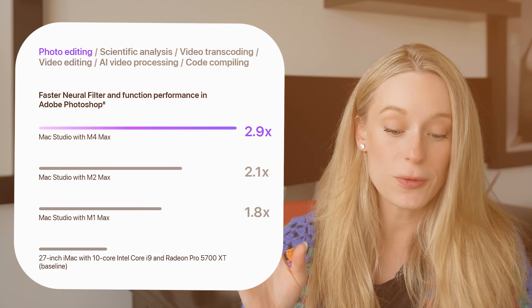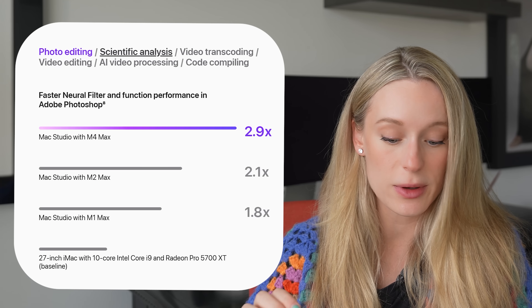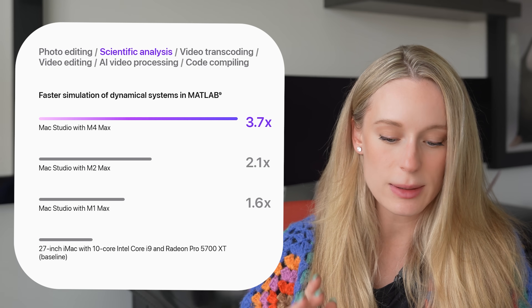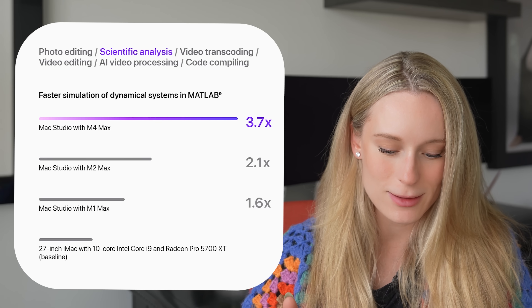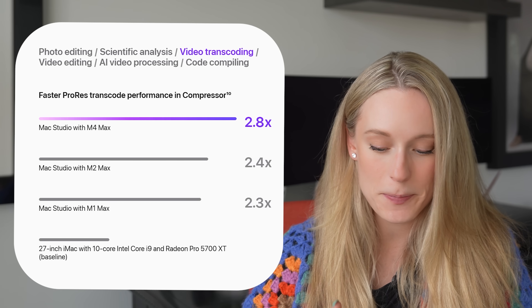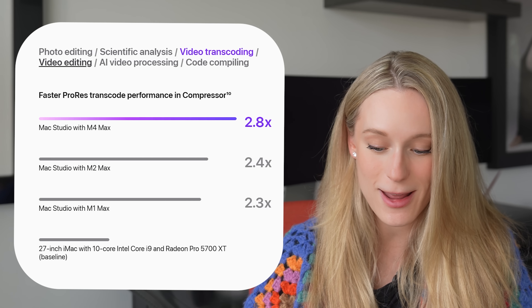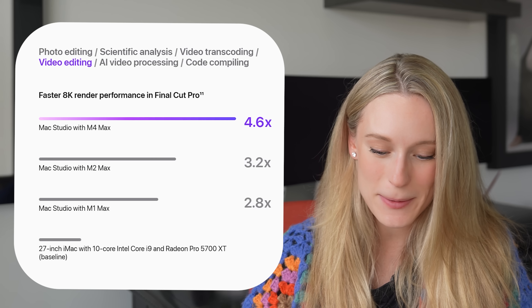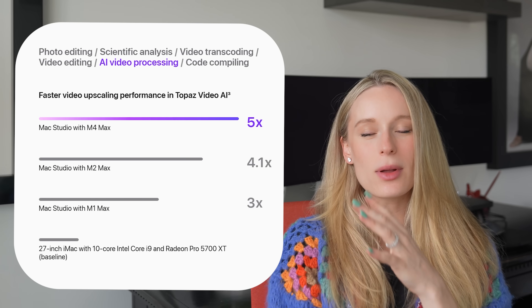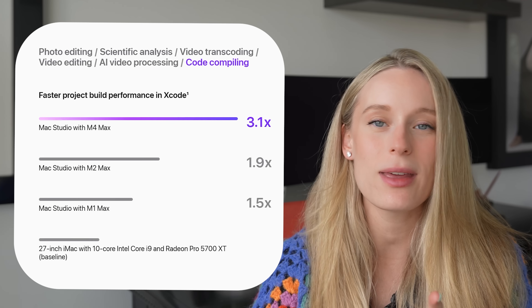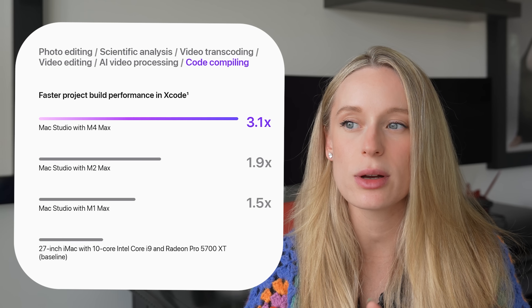There are so many other benefits: faster neural filter performance in Adobe Photoshop, faster scientific simulations, major upgrades for video transcoding, video editing, AI video processing, and code compiling. We've tested running large language models — next we should build something with them. Leave a comment or vote in the poll for what you want to build with this first, including whether you want to integrate AI into it. We'll build the most-voted project together.